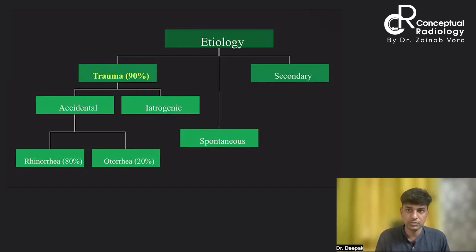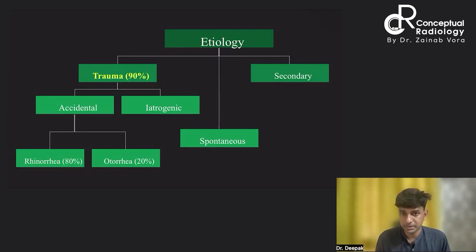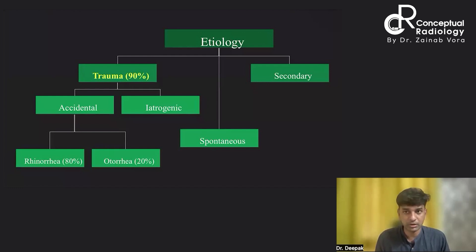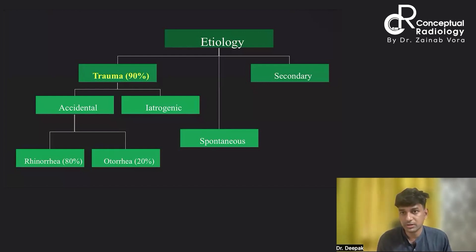A newer etiology is spontaneous CSF fistula, most commonly seen in patients with idiopathic intracranial hypertension. Radiologically, IIH can manifest as empty sella, dilated Meckel's cave, and tortuosity of the optic nerve. Due to the increased pressure, there is hypertrophy of the arachnoid granulations, which causes pressure erosion over the calvarium, resulting in a bony defect.